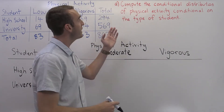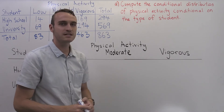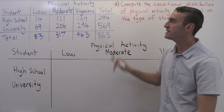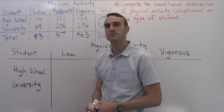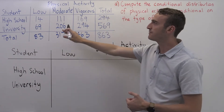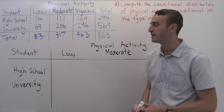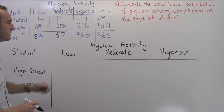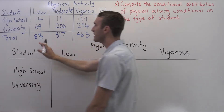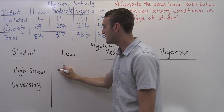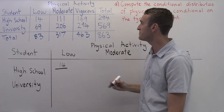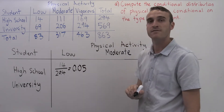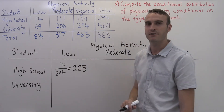Part A asks us to compute the conditional distribution of physical activity conditioned on the type of student. Looking back at our table of counts, we want to condition on the student being at high school and then compute the probabilities that they fall into low, moderate, or vigorous levels of physical activity. For the low category, we take the number of high school students in the low category, which is 14, and divide by the total number of high school students, which is 294. When we put this into our calculator we get 0.05, or 5% of high school students fall into the low category.